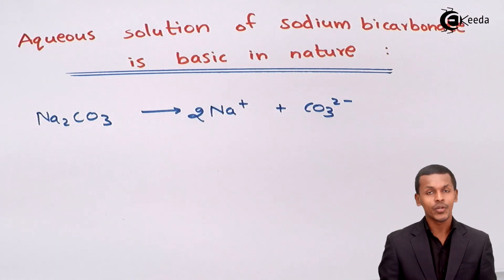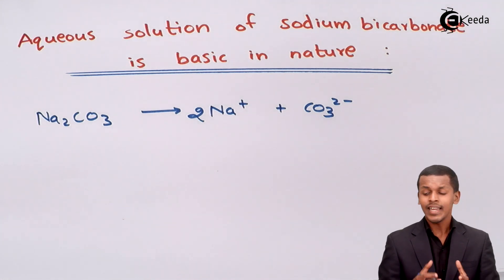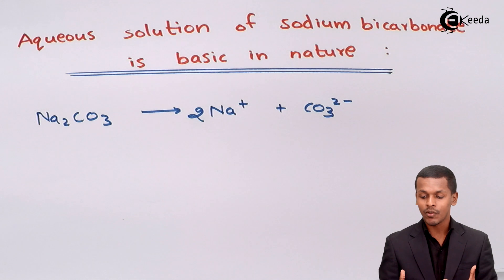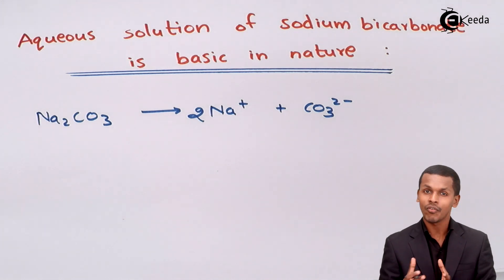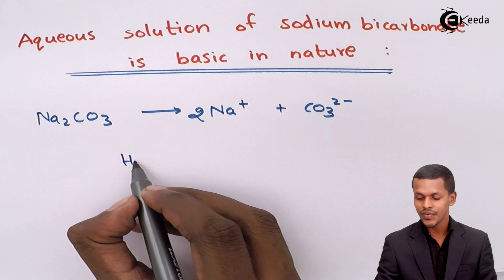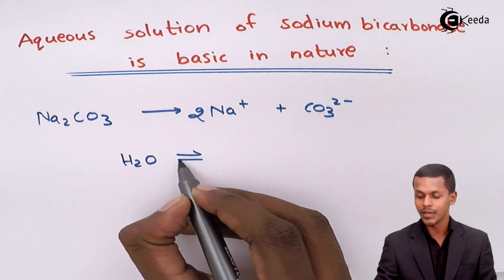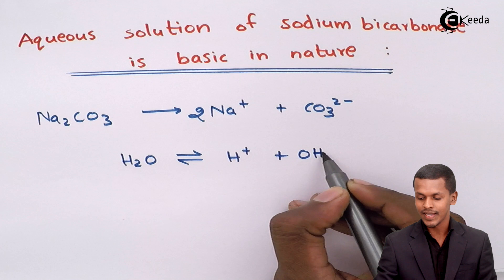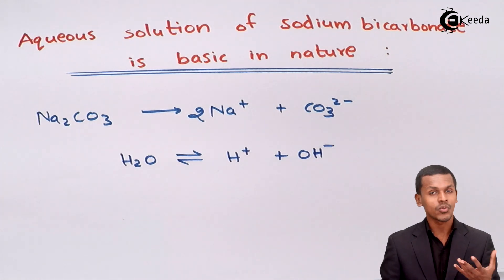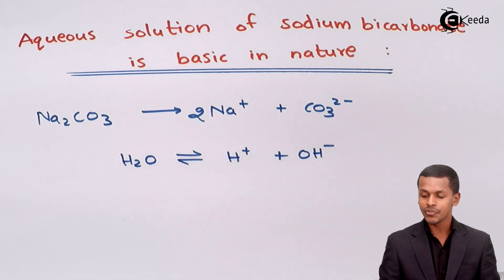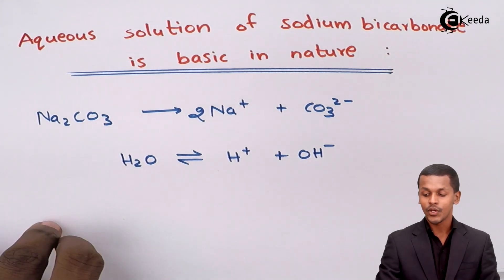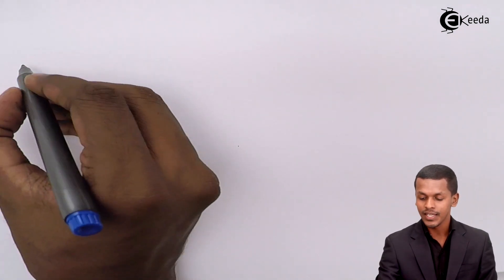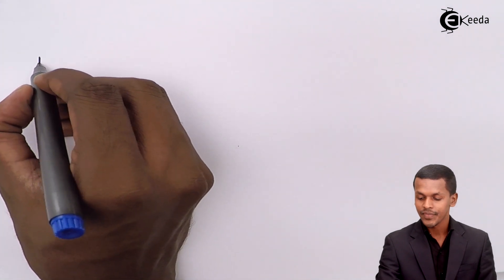These are the ions produced on dissociation. Since Na₂CO₃ forms an aqueous solution, we have to dissolve it in water. Pure water does not dissociate completely into H⁺ or OH⁻ ions, and that's why pure water is called a weak electrolyte. We are going to dissolve sodium bicarbonate, that is Na₂CO₃, in water.